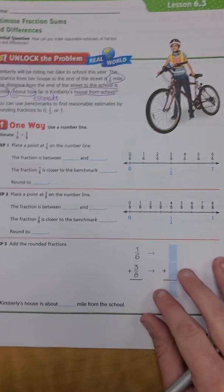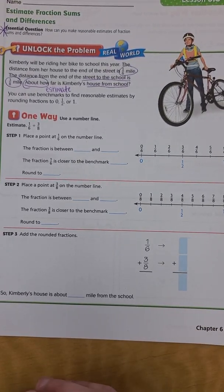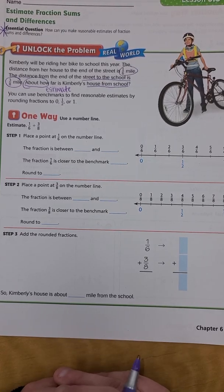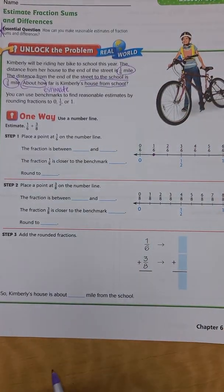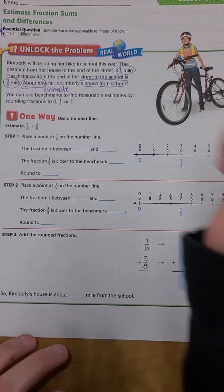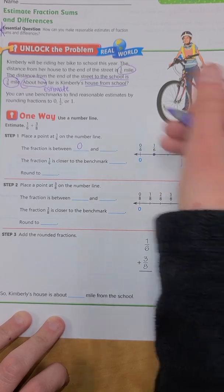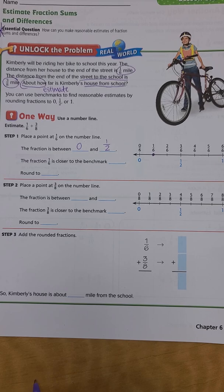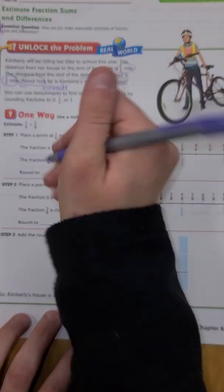One way we can do this is to use a number line. When we estimate, we first place the point at 1/6 on the number line. The fraction is between 0 and 1/2, and 1/6 is closer to 0 on the benchmark, so we would round it to 0.